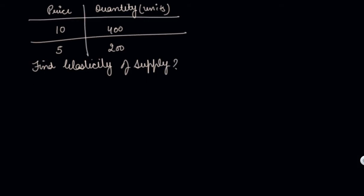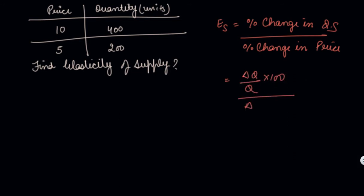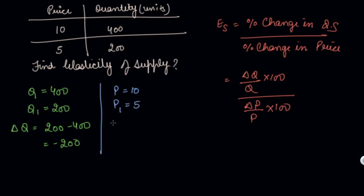Now let us understand your formula. Elasticity of supply is your percent change in quantity supplied to percent change in price, or we have the formula change in Q by Q into 100 divided by change in P by P into 100. See, your initial quantity was 400, your new quantity is 200, so your change in quantity is your new quantity minus your old quantity, you have minus 200. Now your initial price was 10, your new price is 5, your change in price is your new price minus your old price which is minus 5.